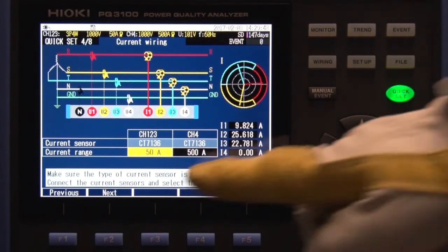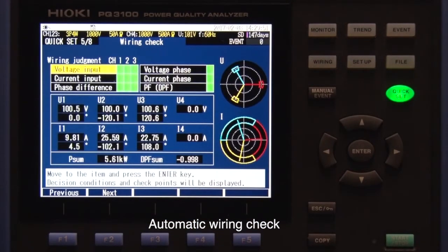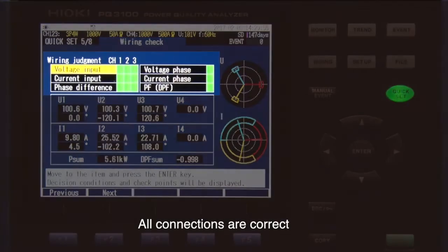The PQ3100 automatically checks for correct wiring and warns you if there is an error. This shows that all connections are correct.